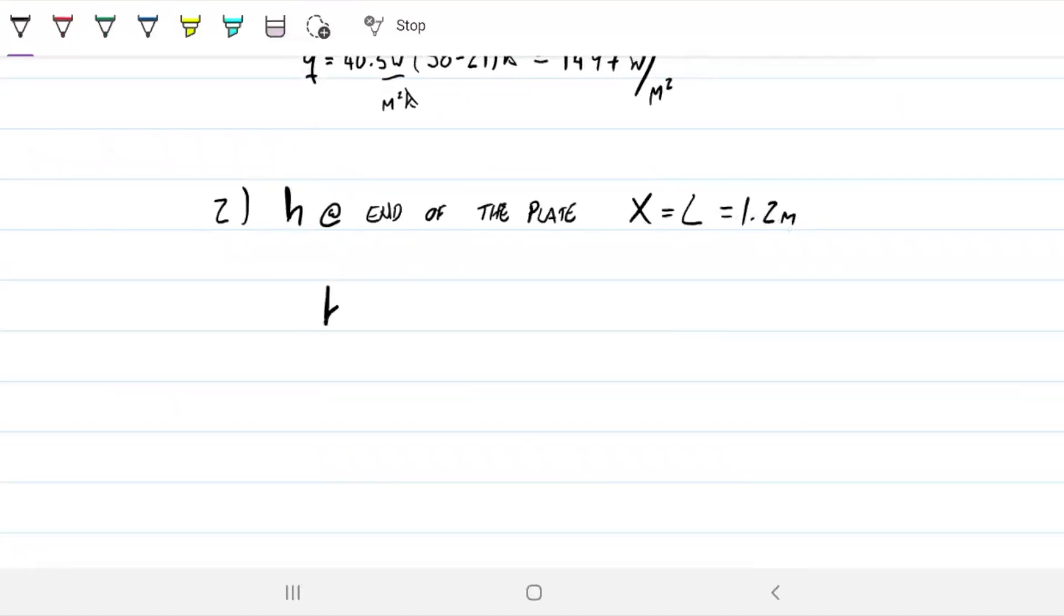So H at 1.2 or H at L, same thing, is 25 divided by 1.2 to the 0.4. And this turns out to be 23.2 watts per meter squared Kelvin or Celsius.